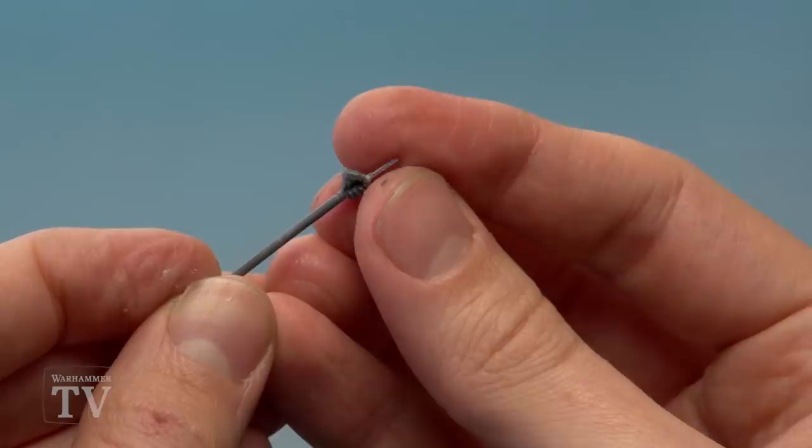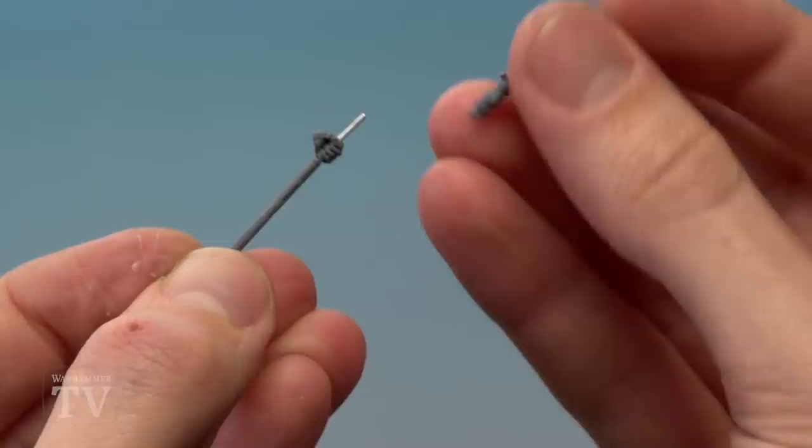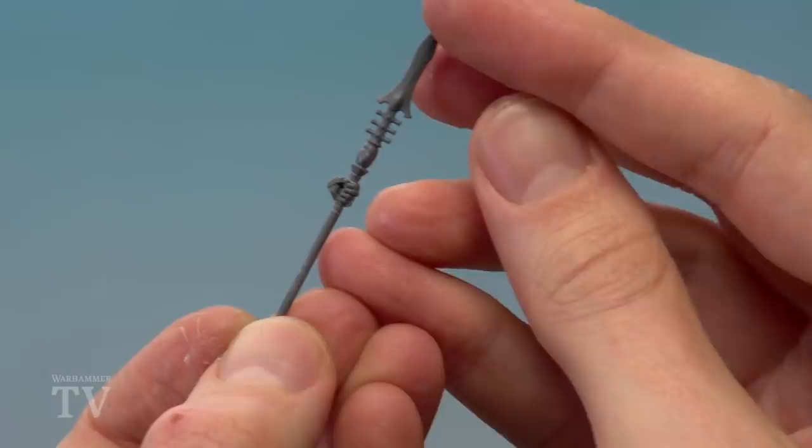Once you've finished drilling those holes you're then ready to do a test fit. So I've got the hand here, slot that in lightly, there we go, you can see the pin completely disappears, and then we've got the spear head here which will go on this side, and there we go. So we've got a good fit, that's now ready to be super glued together, and then glued onto the rest of our Space Marine Captain.